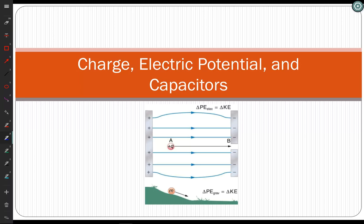Its potential energy is going to go down as it moves toward the negative plate. The picture below shows an analogy: a ball on a slope has higher potential energy at the top and lower potential energy at the bottom. This helps us understand the relationship between electric potential, electric potential energy, and regular potential energy. A charged particle naturally goes to its lowest potential energy state. A positive charge is attracted to negative, so it goes toward negative. A negative charge is attracted to positive, so it goes toward positive.